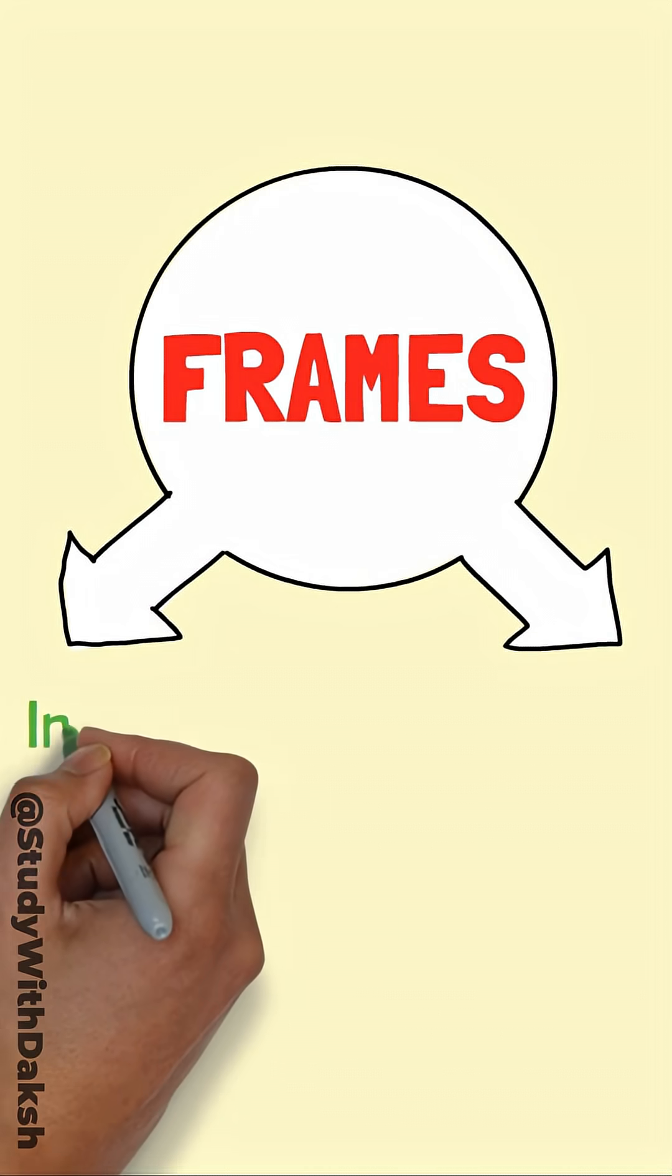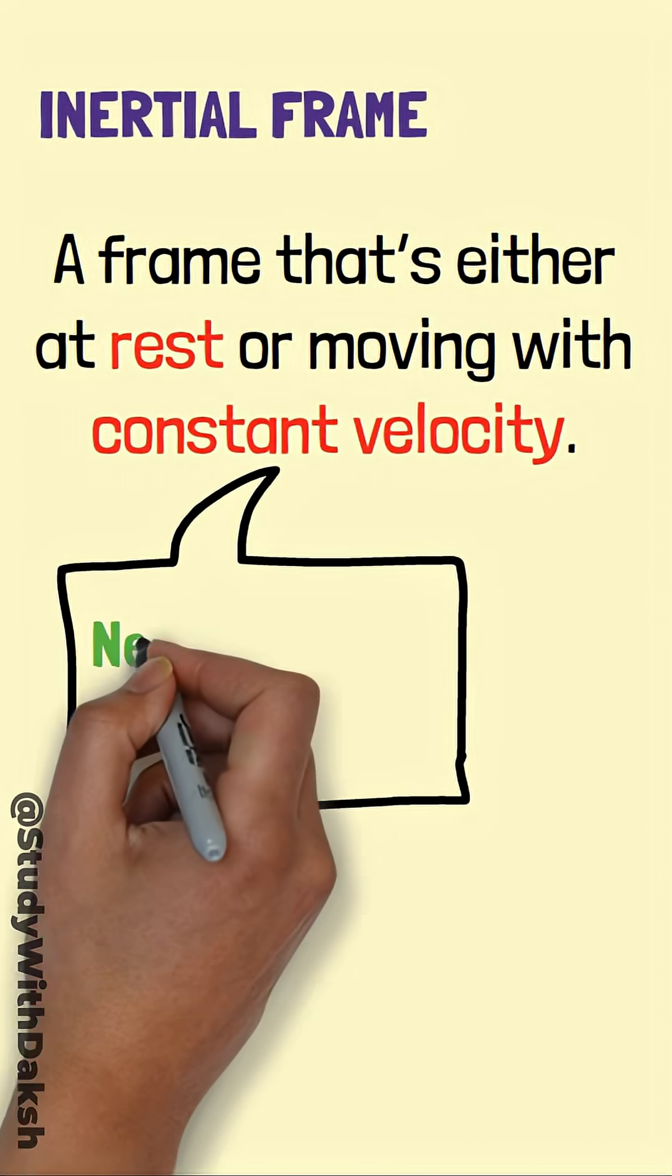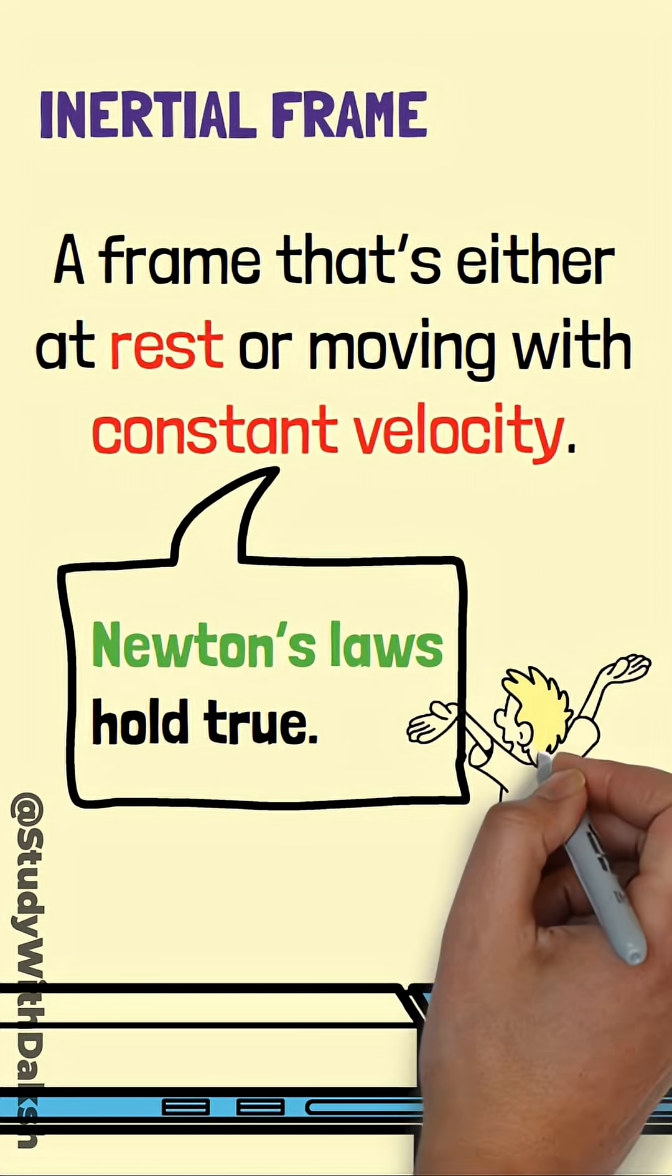Now, frames can be of two types. One, inertial frame, a frame that's either at rest or moving with constant velocity. Here, Newton's laws hold true. Example, the person standing on the platform.